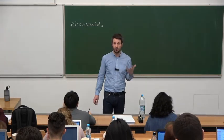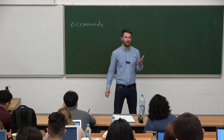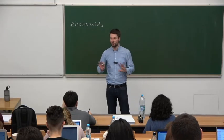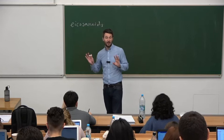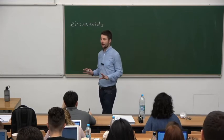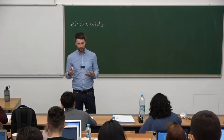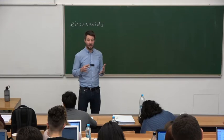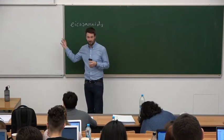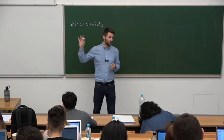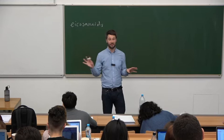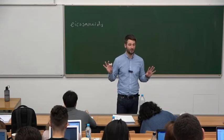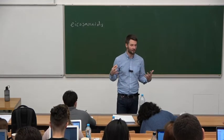Eicosanoids have 20 carbons and are derivatives of 20-carbon fatty acids. Do you know any fatty acids that contain 20 carbons? Arachidonic acid. So we know arachidonic acid — what kind of acid is that? It's polyunsaturated, meaning it has more than one double bond. How many? It has four double bonds and 20 carbons.